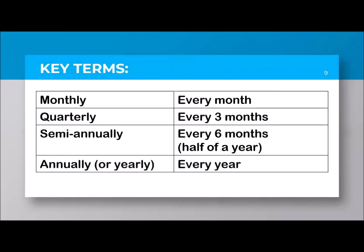Now, the key terms I want you to remember: monthly means every month. Quarterly means every three months — because a quarter means four parts, so 12 months divided by four gives every three months. Semi-annually means every six months — semi means half and annually means year, so half of a year. And annually or yearly means every year.